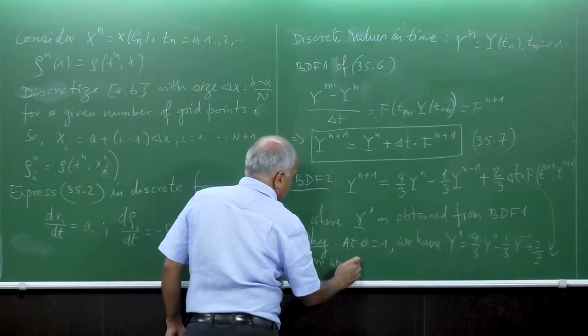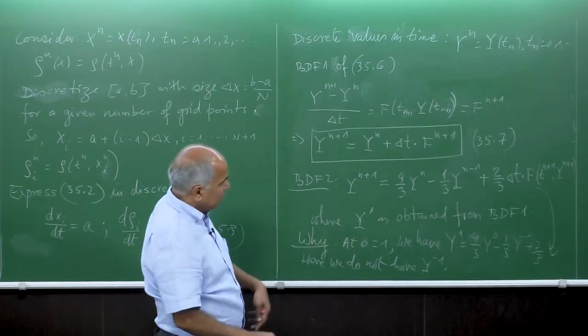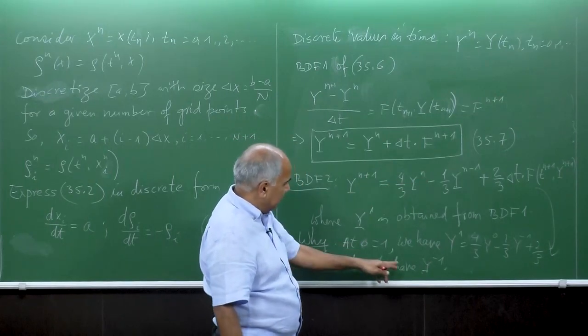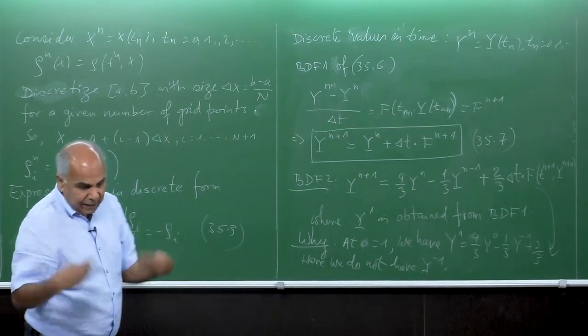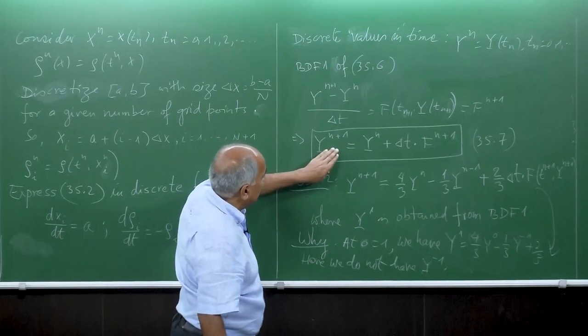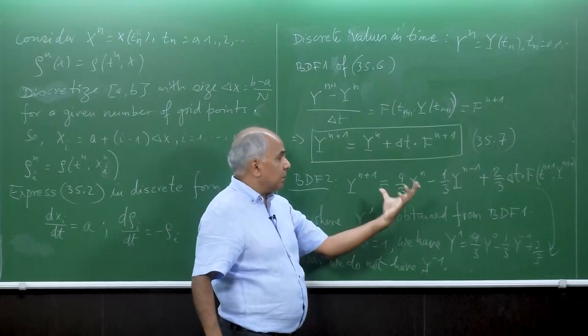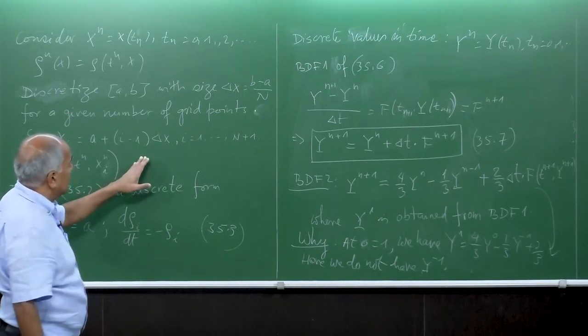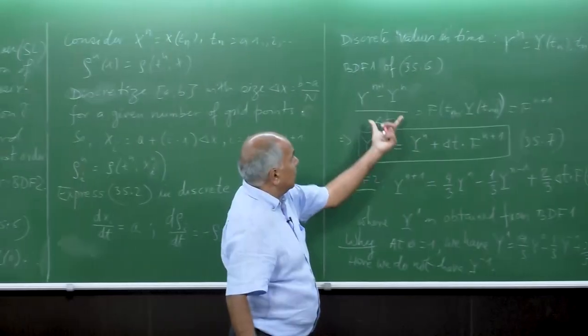Therefore here, because if n is equal to 0, we have y of 1, but we do not have y minus 1. So here we do not have y of minus 1. Once we know the first step then there is no problem. Then if n is 1, y 1 is known. So this is BDF 2 - only first time step we use BDF 1 for the ordinary differential equation solver.